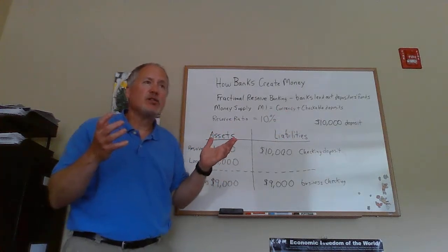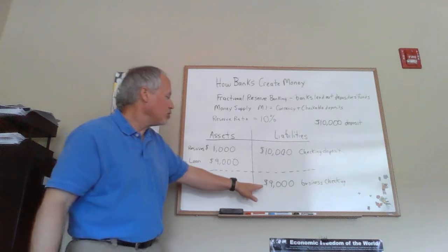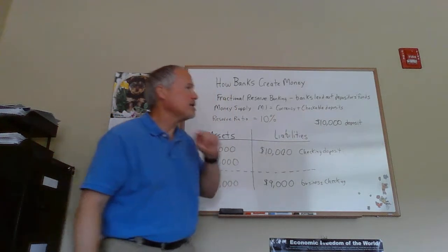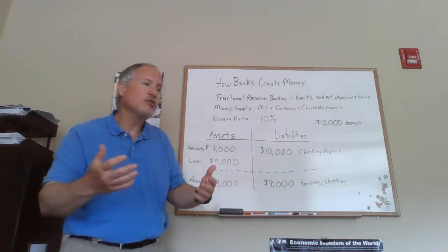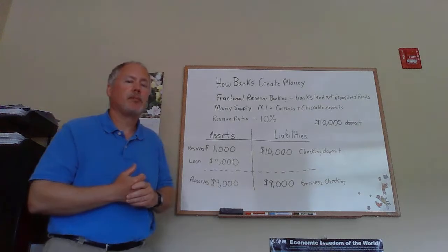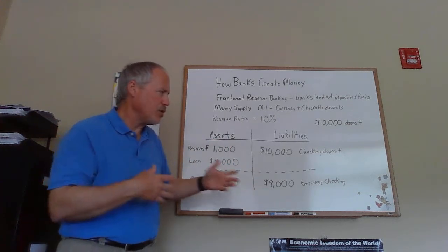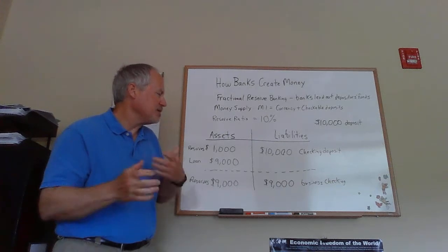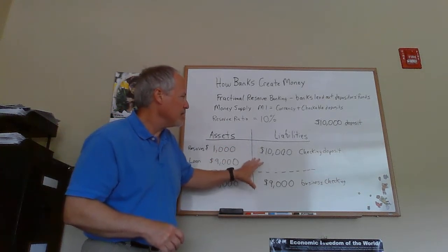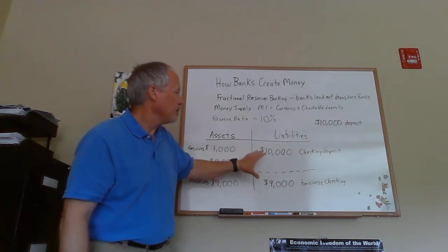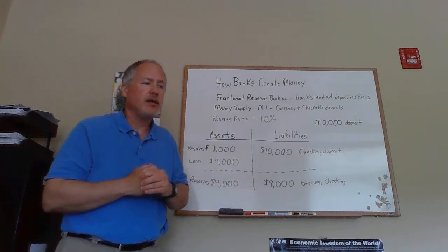We now have nineteen thousand dollars in checking accounts. The money supply is currency plus checkable deposits. We started talking about ten thousand dollars, and yet suddenly we have nineteen thousand dollars — money has appeared, money has been created. This happened simply because checkable deposits are part of the money supply, and with fractional reserve banking, when money comes into the banking system and banks make loans, the money supply increases.